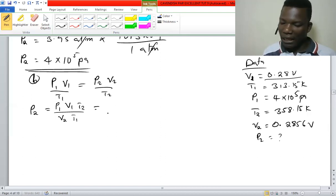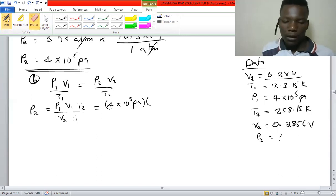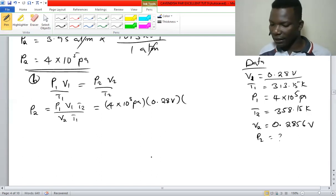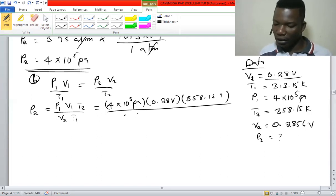We can plug in: P2 equals 4 times 10 to the power 5 pascals, V1 is 0.28 V, second temperature is 358.15 K, V2 is 0.2856 V, and T1 is 313.15 K.